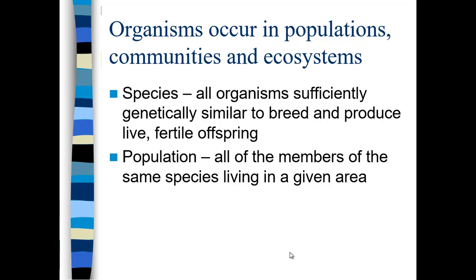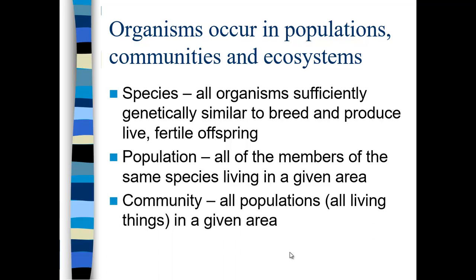If we count all the members of the same species in a given area, we call that a population. When we talk about the population of Redding, California, we're only talking about the people — one species — not snakes or amoebas. If we add up all of the living things — all the populations in a given area like the city of Redding — we call that a community. A community includes all living species but nothing inanimate.